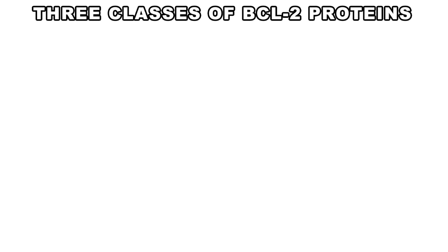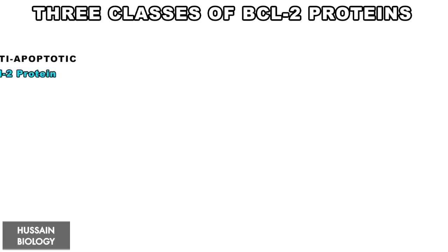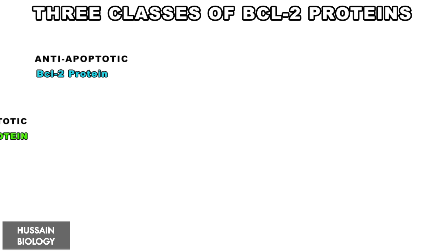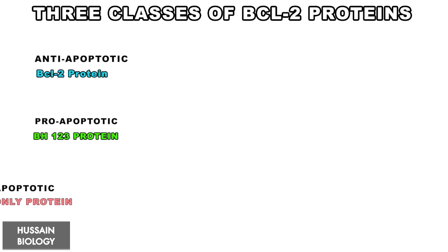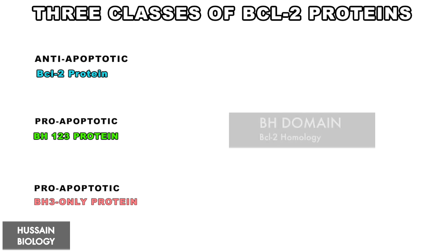Now let's classify these BCL-2 family genes according to the domains present in their structure. There are three classes of BCL-2 family proteins: the first is anti-apoptotic BCL-2 proteins, the second is pro-apoptotic BH1-2-3 proteins, and the third is also pro-apoptotic but referred to as BH3-only proteins. These BH domains are BCL-2 homology domains present on the protein structure.